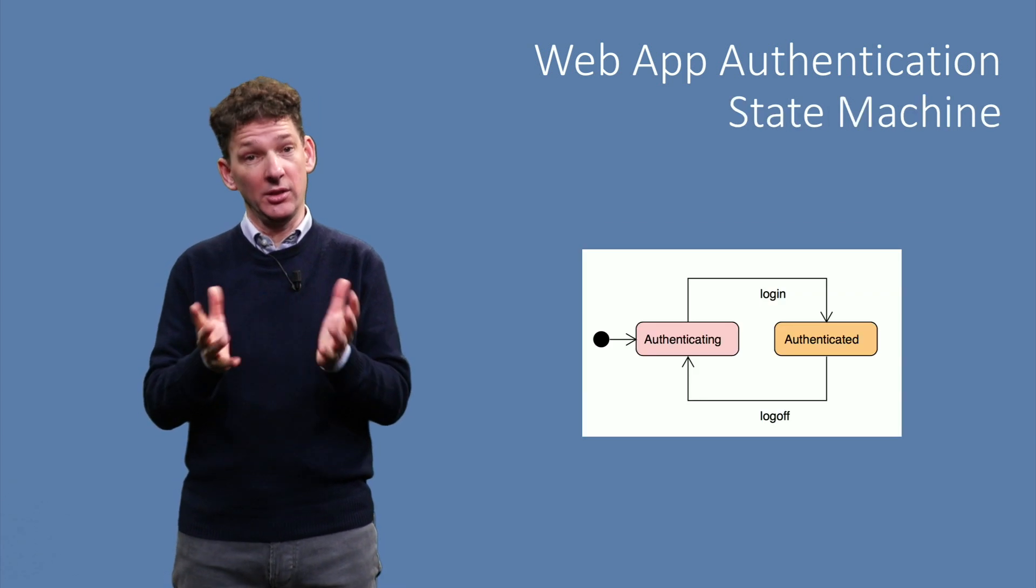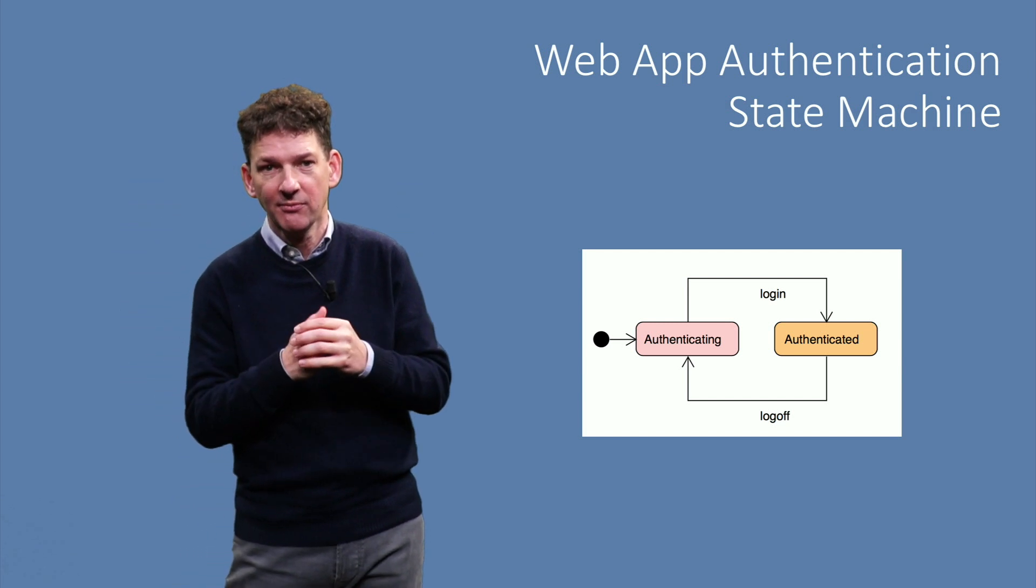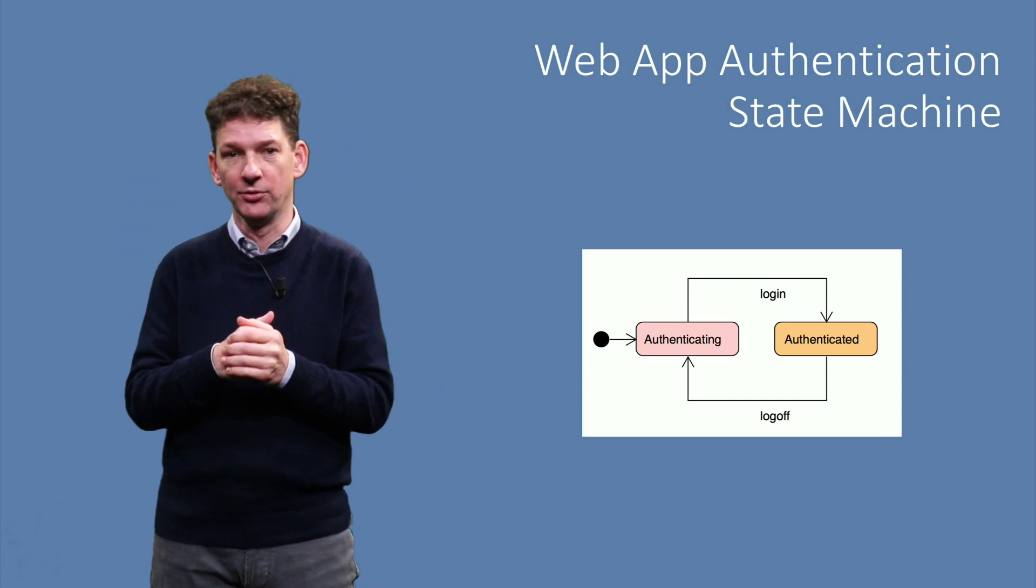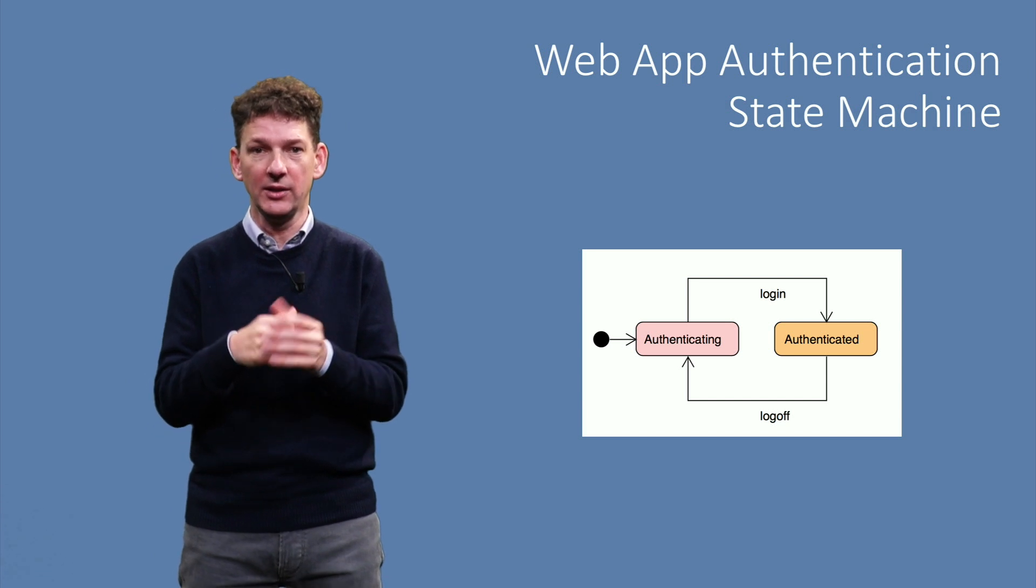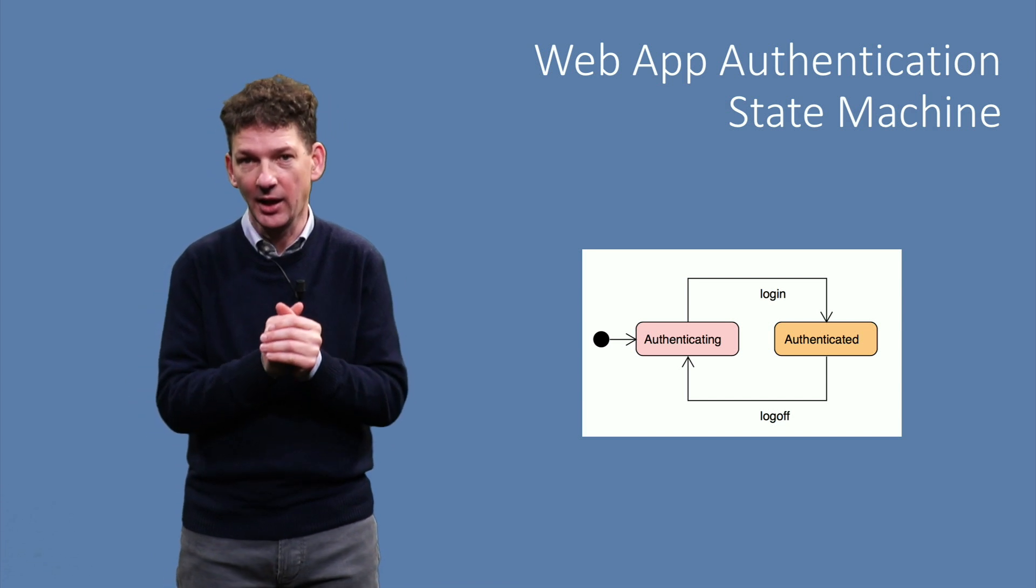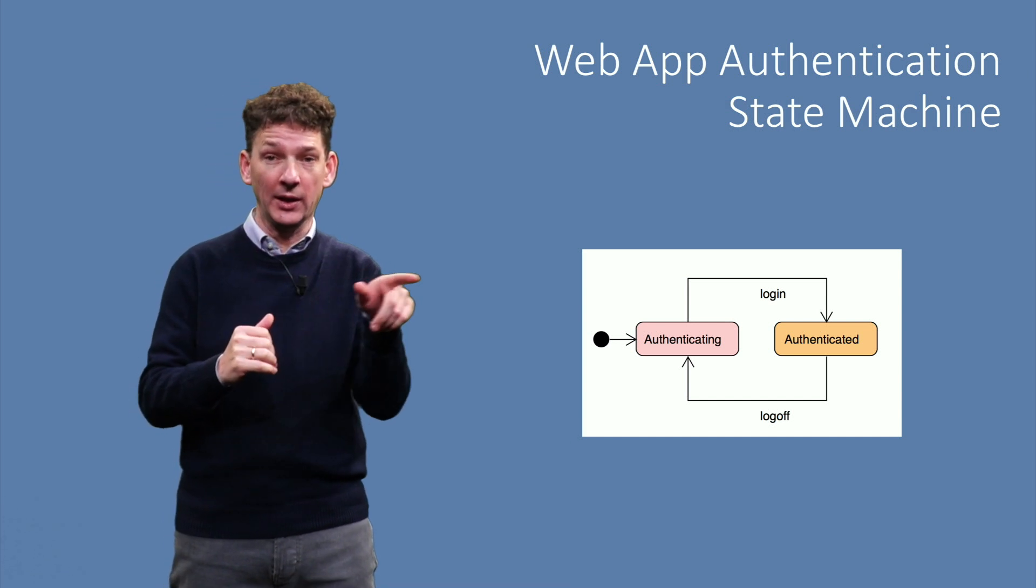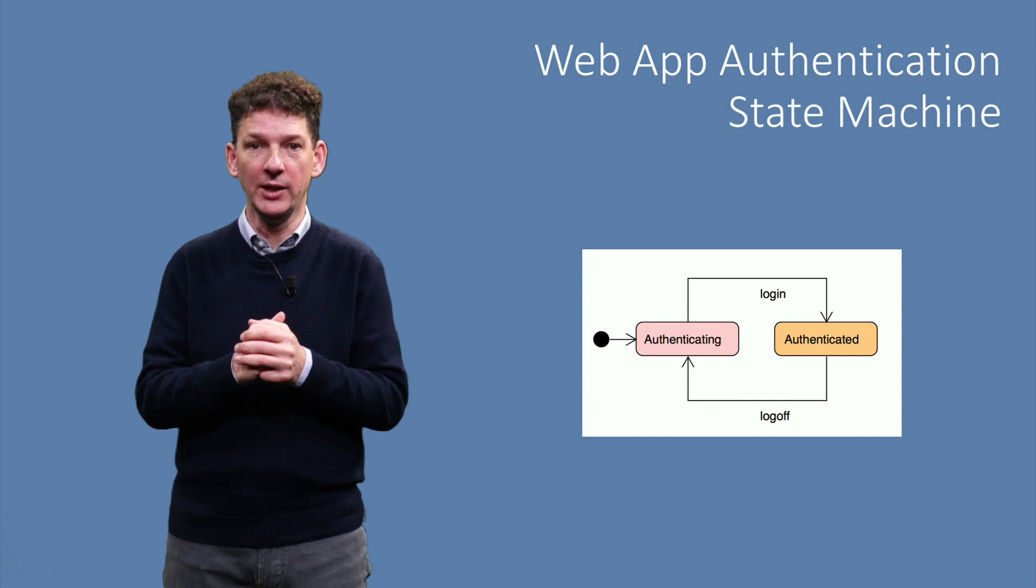The state machine for this is easy to draw. We start in a state called authenticating, in which we can enter our credentials. A successful login event leads to the state in which we actually are authenticated, and we can use the app. From there we can log off again to get back to the initial state.